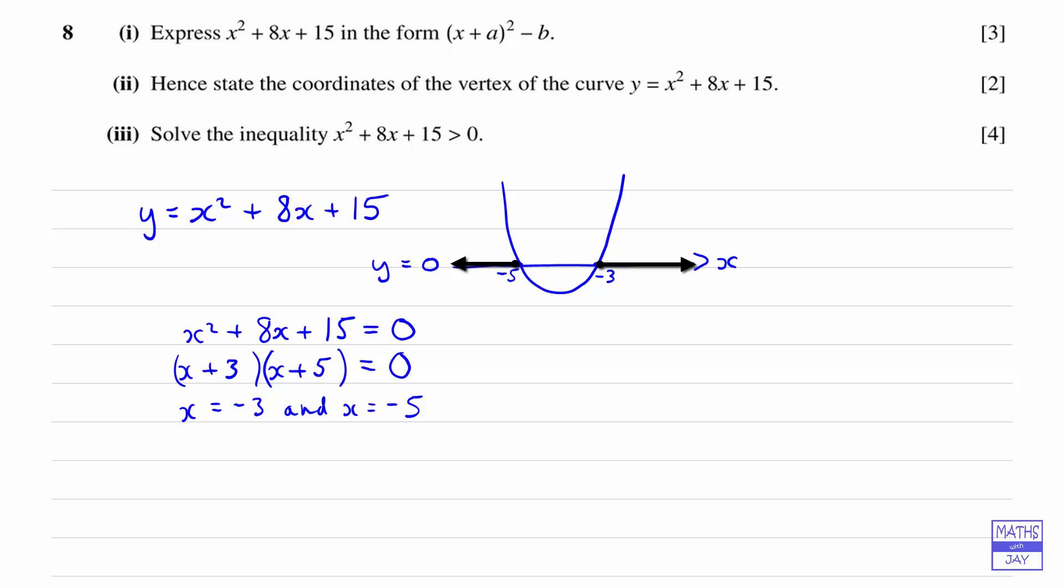So the solution to the inequality is that x is less than negative 5 or x is greater than negative 3. So you could check this out. One thing to remember is that in part 2 we've already found the coordinates of the vertex of the curve. Remember there we found that x was equal to negative 4. So that's halfway between negative 3 and negative 5, which is good. And that gave us a negative value for y.